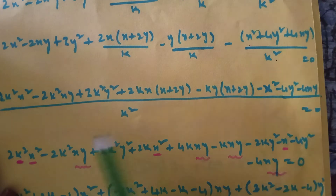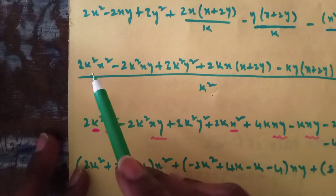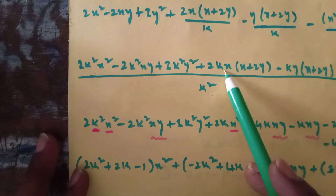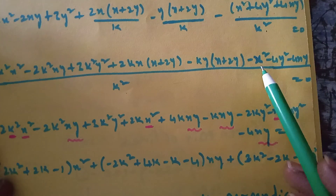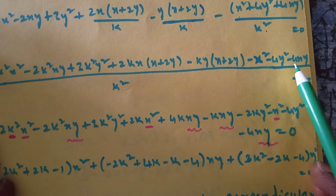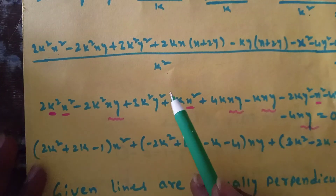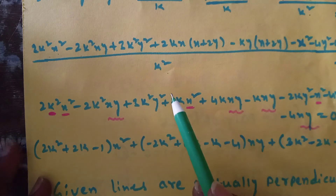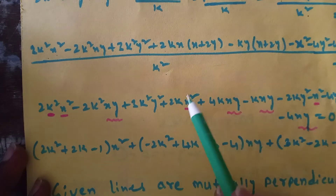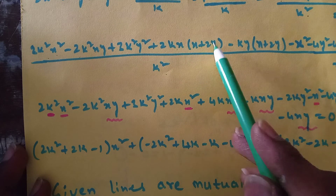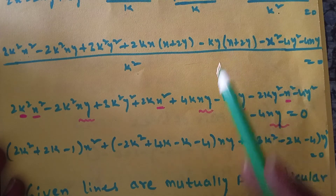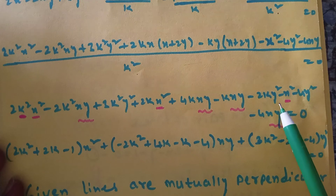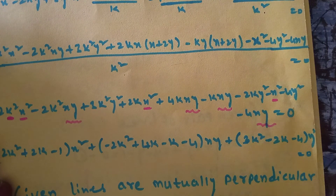Taking the total LCM as k², multiply through by k²: 2k²x² - 2k²xy + 3k²y² + 2kx² + 4kxy - kxy - 2ky² - x² - 4y² - 4xy = 0.